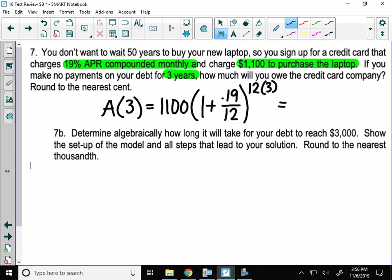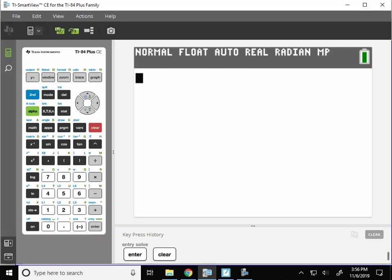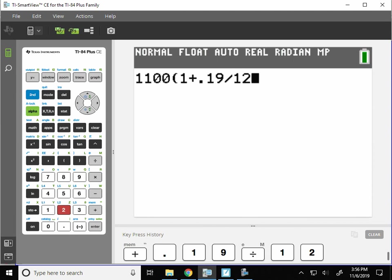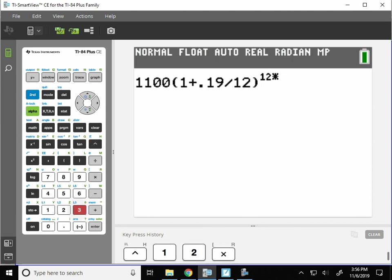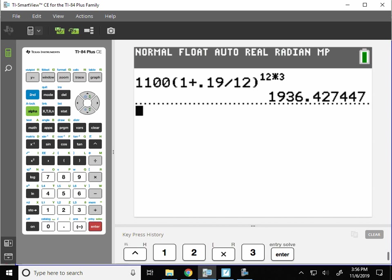And I'm going to do the same thing I did before. I'm going to type this into my calculator. So I'll have $1,100, 1 plus 0.19 divided by 12. And that means if you do not pay off your credit card in 3 years, you're going to owe almost $2,000. $1,936.43.